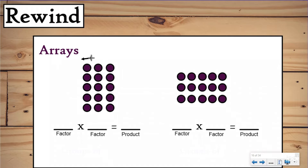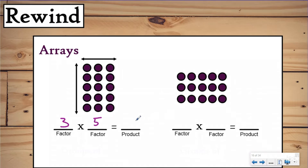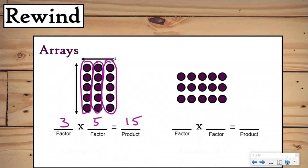When you learned about arrays you learned that rows go side to side and columns go up and down. This array shows three columns, and in each column there are five circles. So you would write this as three times five, which equals 15. You probably first started counting by ones, then moved to skip counting by fives. Eventually you learned that multiplication is repeated addition, and you could use your basic facts to multiply and save a ton of time.